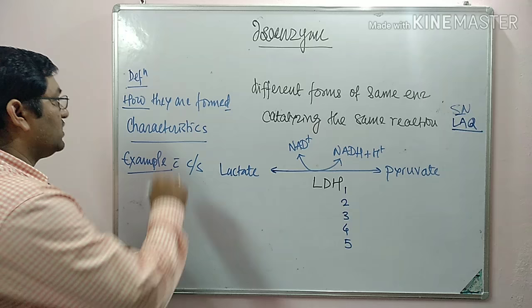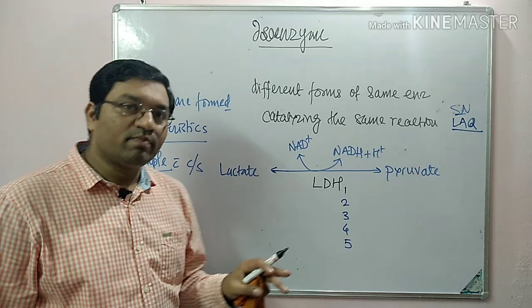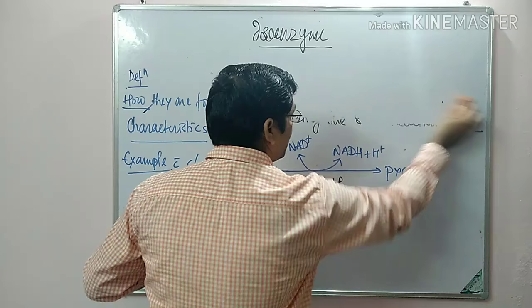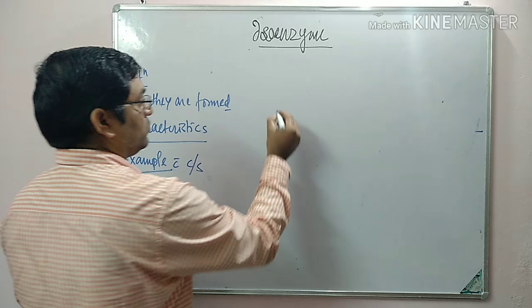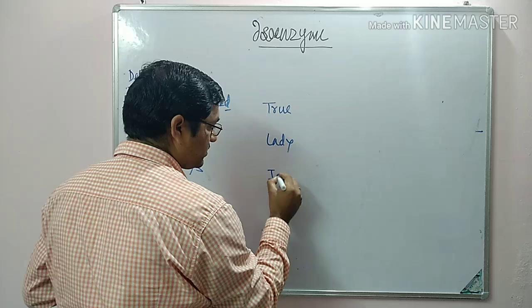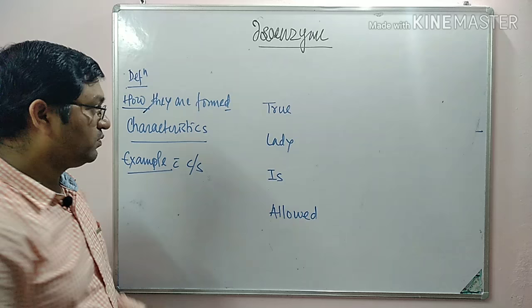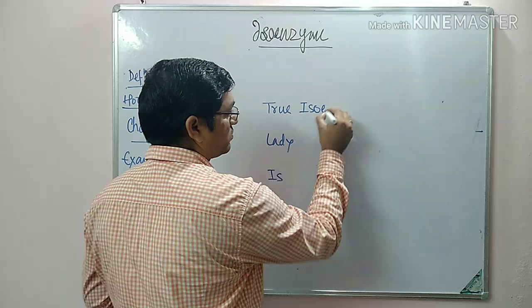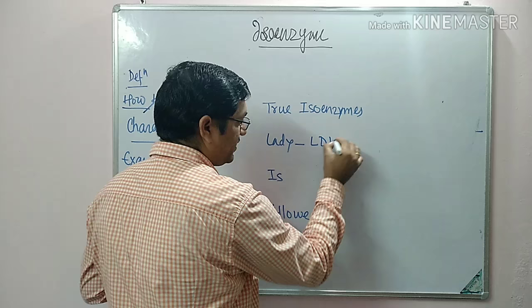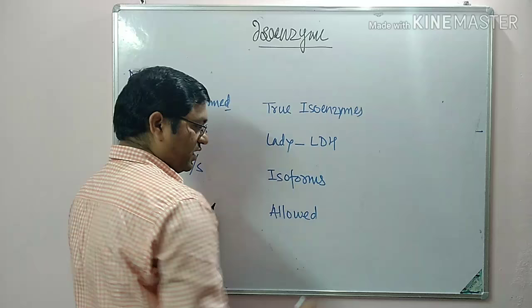Now coming to how isoenzymes are formed. There is a mnemonic to remember this: 'True Lady Is Allowed.' True means true isoenzymes, Lady means lactate dehydrogenase isoforms, Is means isoforms, and Allowed means alloenzymes or allozymes.